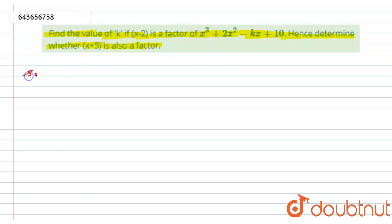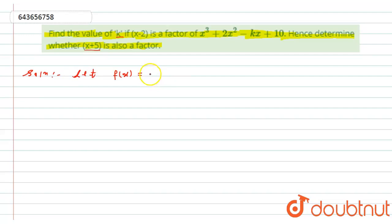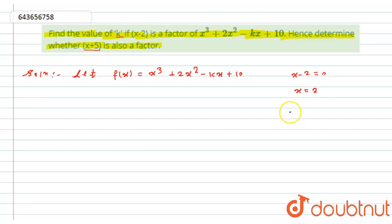For this solution, we are given that (x minus 2) is a factor of this equation, so we have to find the value of k, and also determine whether (x plus 5) is also a factor. Let us define f(x) = x³ + 2x² - kx + 10. Since (x minus 2) is a factor, we set x minus 2 equals 0, giving x equals 2, and the remainder f(2) must equal 0.